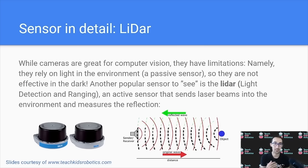Switching from digital cameras to another sensor, the LiDAR, we can go and investigate another way robots are able to see the world around them. So while cameras are great for computer vision, they have a key limitation, which is that they rely on light in the environment, since they're a passive sensor. So this can be problematic if you're operating at night. Or in low light environments.